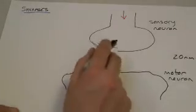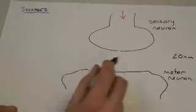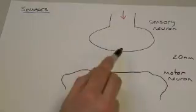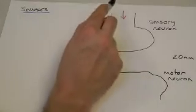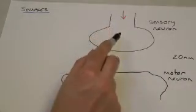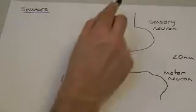So there's actually a very small gap, about 20 nanometers across, which isn't very big, but it's enough to slow the nerve impulse down.